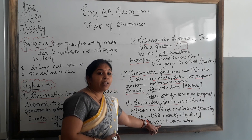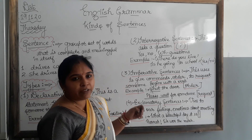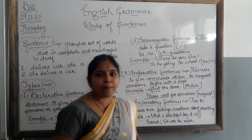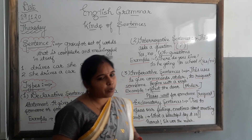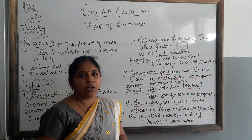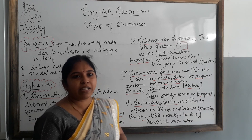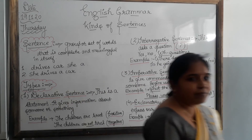Today we learned about four types of sentences: declarative sentence, interrogative sentence where we put a question mark, imperative sentence in which we give orders, commands, or requests, and exclamatory sentence which tells us about the sudden feelings and emotions of someone, made with an exclamation mark. Read the chapter carefully and try to understand it. That's all in today's lesson. Have a nice day. Thank you.